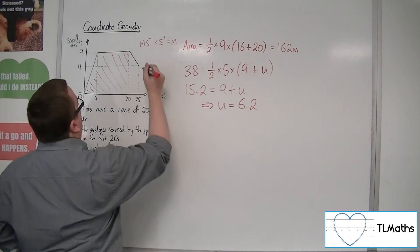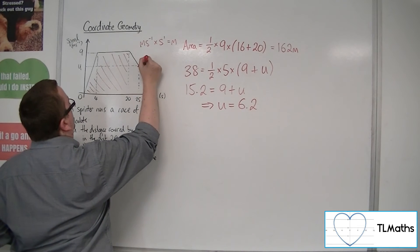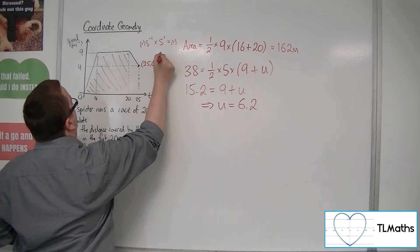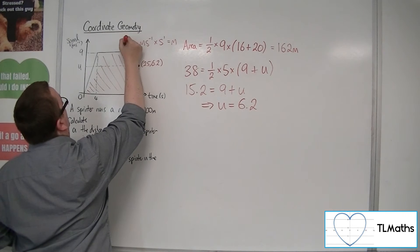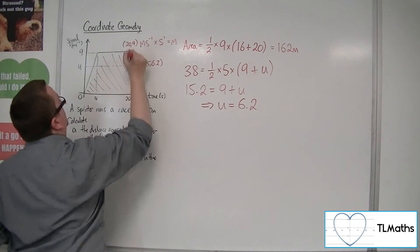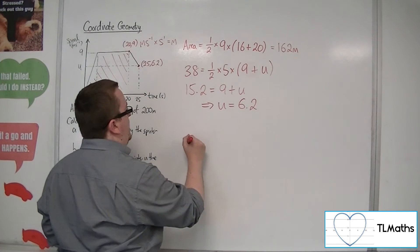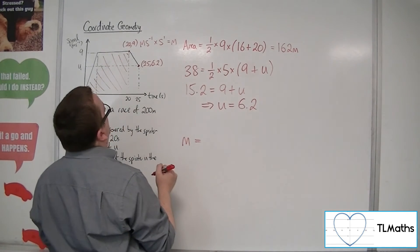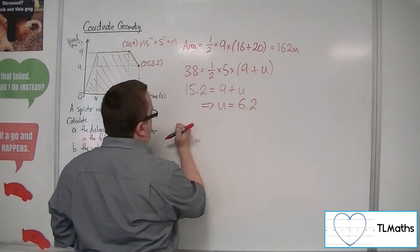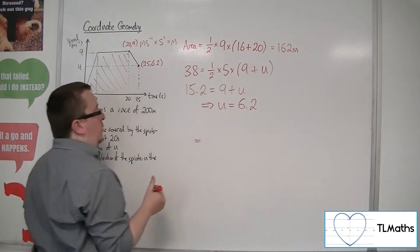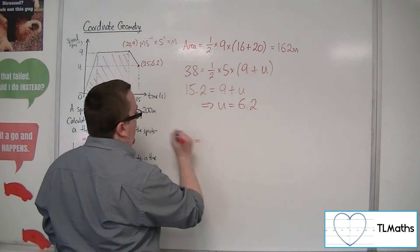So if you think of this as the coordinate 25, 6.2, and this is the coordinate 29, then we can work out the gradient, which we'll call m. Actually, probably best not call it m.